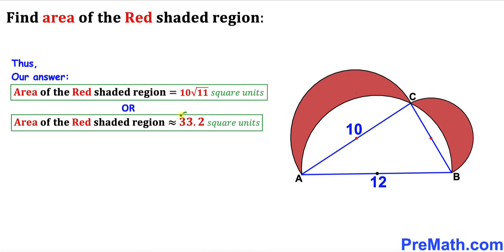The area of the red shaded region is approximately equal to 33.2 square units. Thanks for watching, and please don't forget to subscribe to my channel for more exciting videos.